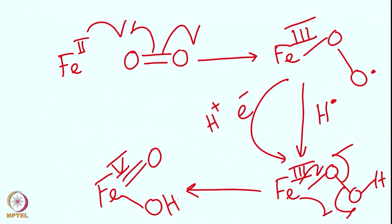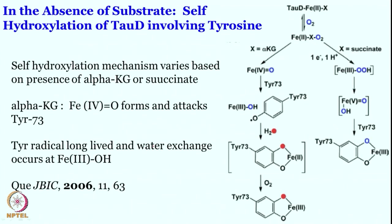So the iron(V)-oxo-hydroxy intermediate is forming here — iron(III) gets oxidized once, then gets oxidized again. From there, as you can see, this iron(V)-oxo-hydroxy can also give the catechol-type intermediate formation. The conclusion from this reaction is: the tyrosine radical is long-lived, water exchange occurs at iron(III)-hydroxo, and iron(IV)-oxo forms and attacks tyrosine-73.